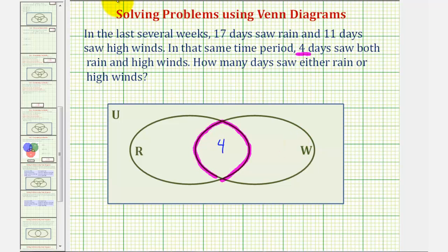This leaves 17 minus four, or 13 days that only saw rain, in this region here. These 13 days only saw rain, but not high winds.